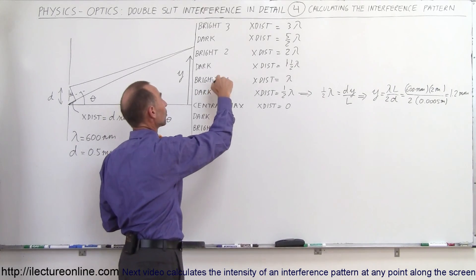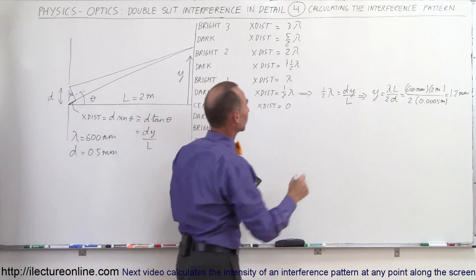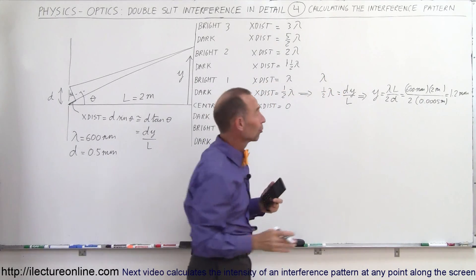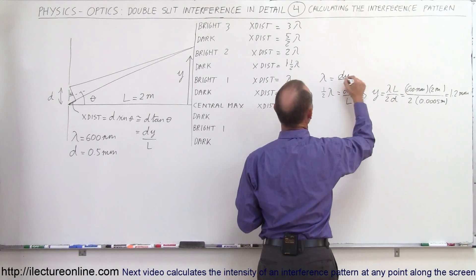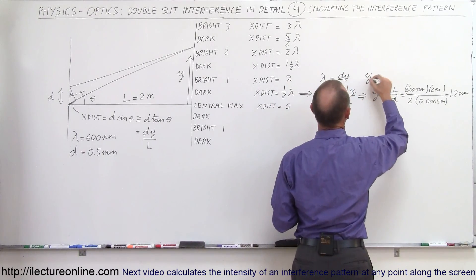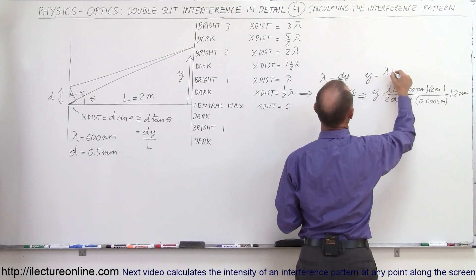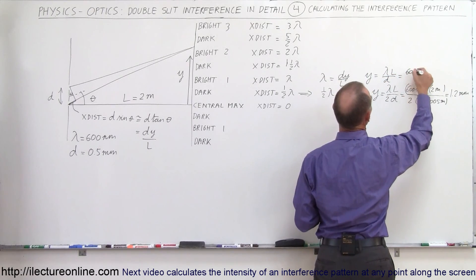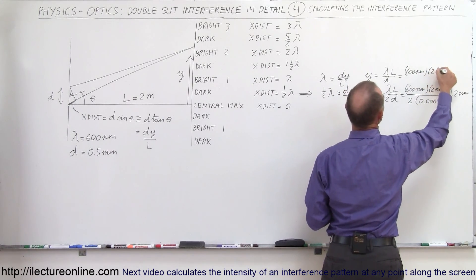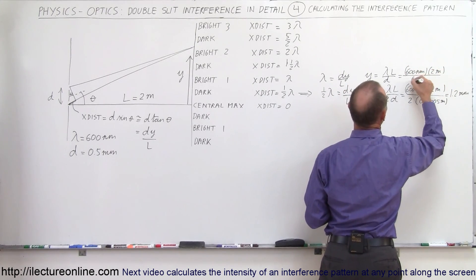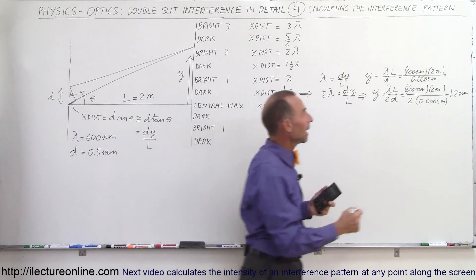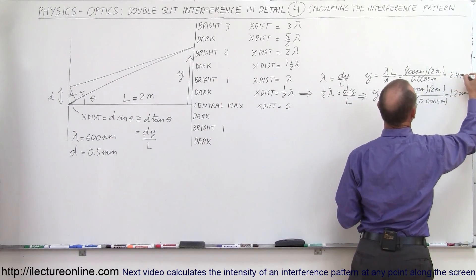Now we want to find the first bright spot away from the central maximum. We set 1 lambda — the extra distance traveled for the first bright spot — equal to dy over L. So y equals lambda·L over d. Plugging in the numbers: 600 nanometers times 2 meters divided by 0.0005 meters. Since we don't divide by 2, it's double the amount — 2.4 millimeters.